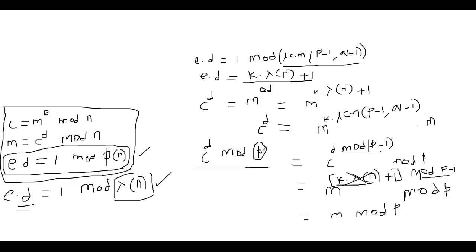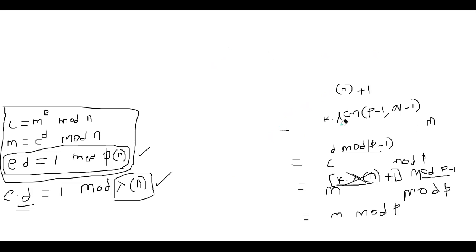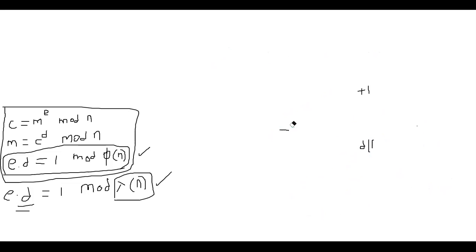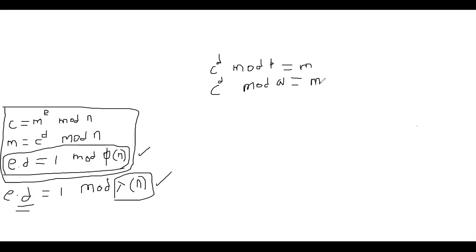If you do the same thing replacing p with q, you get c^d mod q = m mod q. So we've proved that c^d mod p = m mod p and c^d mod q = m mod q. By the Chinese Remainder Theorem, c^d mod (p·q) = c^d mod n = m.